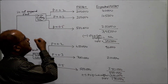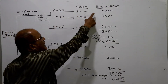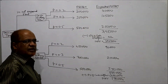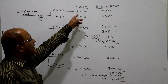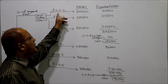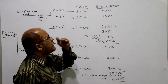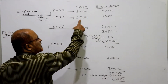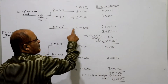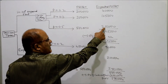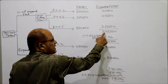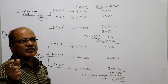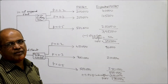Now we multiply: 0.2 × ₹2 lakh = ₹40,000. This is the expected CFAT. CFAT × probability gives expected CFAT. So 0.3 × ₹3 lakh 50,000 = ₹1 lakh 5,000. And 0.5 × ₹5 lakh = ₹2 lakh 50,000. Now adding these three up gives ₹3 lakh 95,000.